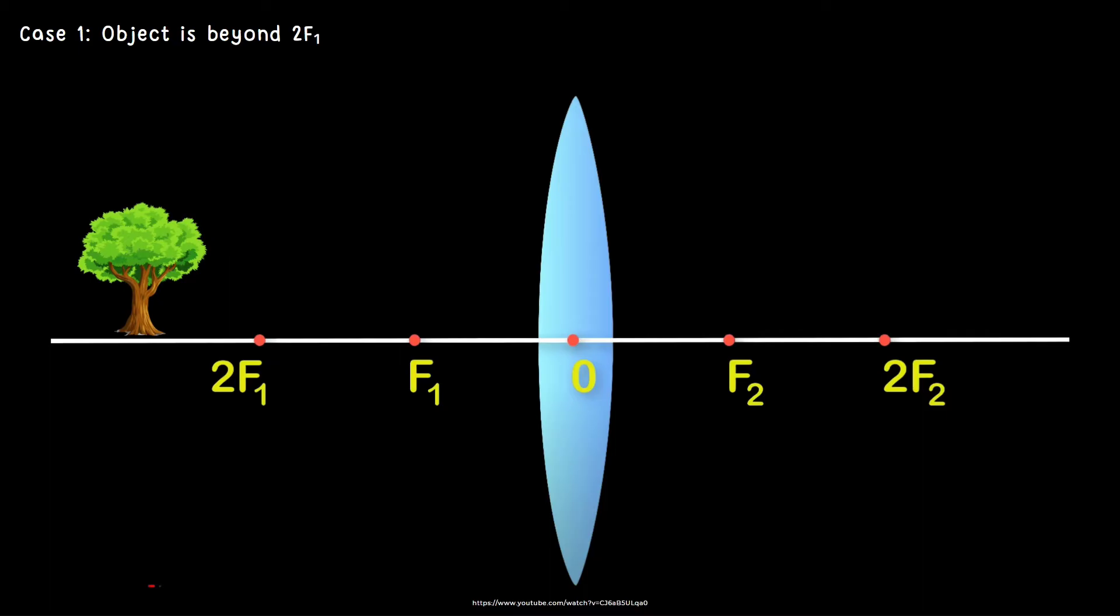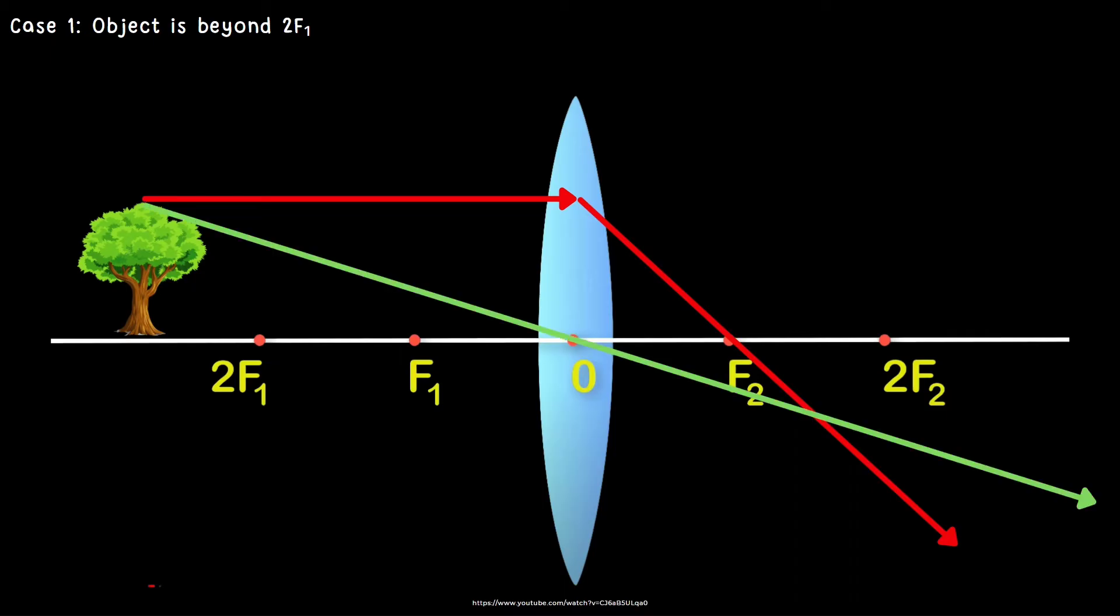Let's try case number 1, wherein the object is beyond 2F1. Next we have an incident ray, parallel to the principal axis, and will pass through the focus. For ray 2, it goes straight. And now, where did the intersection happen? Here right? And again, wherever the intersection is, that's where the image forms.